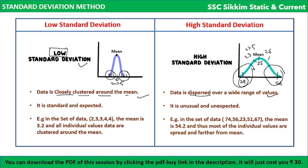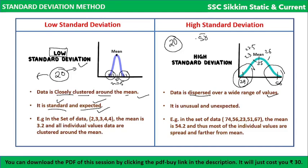In low standard deviation, data is standard and expected — meaning the data values are all close to the mean, so we can expect values near the mean. For instance, if the mean is 20 and all values are around 20, those are expected values. But if the mean is 20 and a value is 50 or 5, that is unexpected — that's high standard deviation.